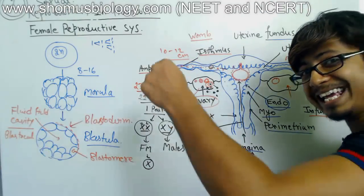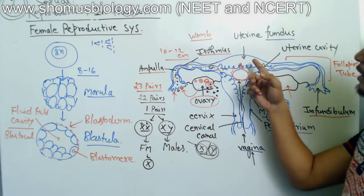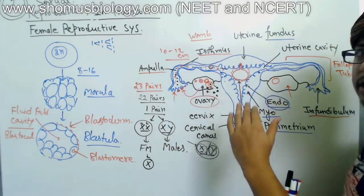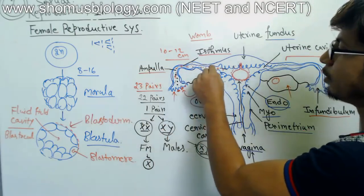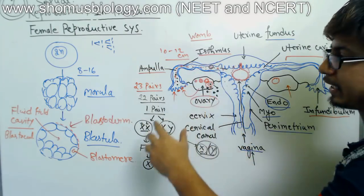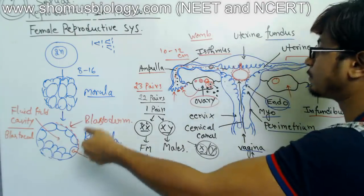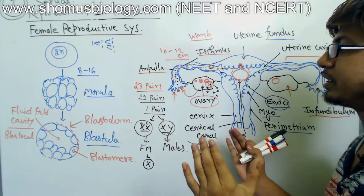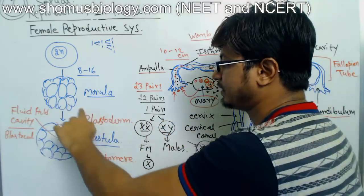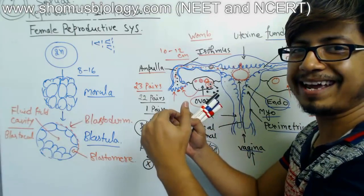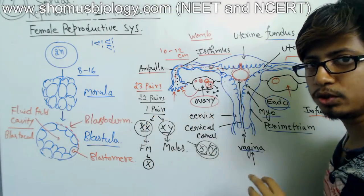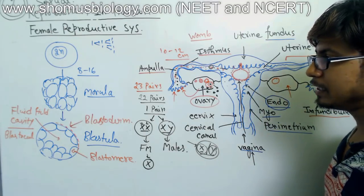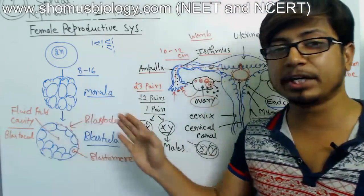The trophoblast tissue on the outside of the blastula interacts with the uterine fundus during implantation. The zygote produced in the fallopian tube starts dividing, producing the blastula, which then embeds into the endometrium of the uterine wall. The endometrium tissue slowly engulfs and interacts with the trophoblast, completing the process of implantation.